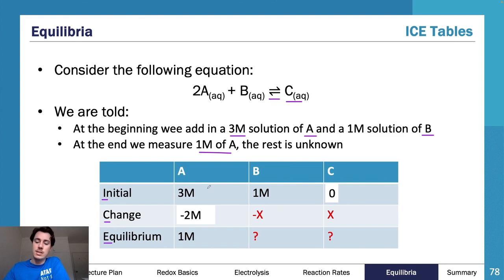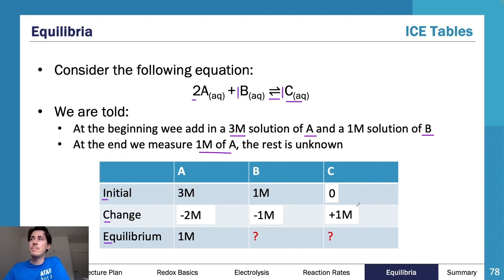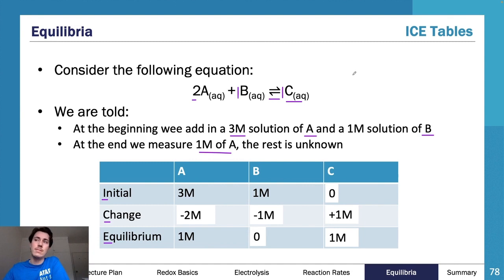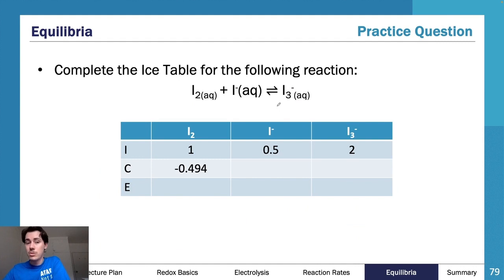Given that this is 2x — because there's a coefficient of two in front of A — and the others have coefficients of one, the change for B must be negative one (same side as A) and for C must be positive one (other side). Therefore the equilibrium concentrations are zero for B and one for C.